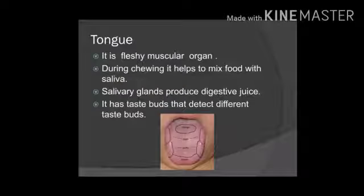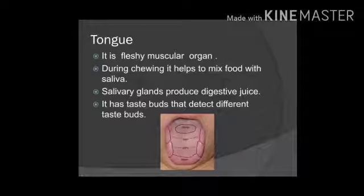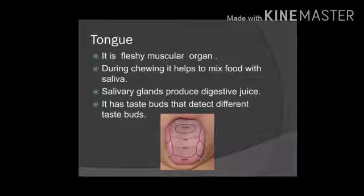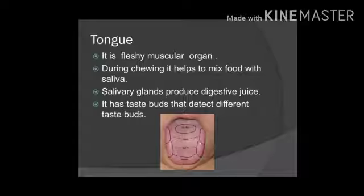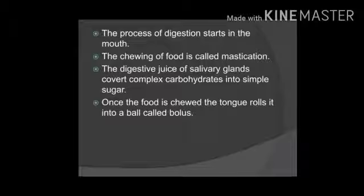The tongue is a fleshy muscular organ present in the buccal cavity. When we are chewing food, the tongue helps in mixing saliva and food. Digestive juices are also produced in the salivary glands. The tongue also helps in swallowing the food. It is a very important sense organ. Taste buds are present on the tongue which help us detect four tastes: sweet, salty, bitter, and sour.